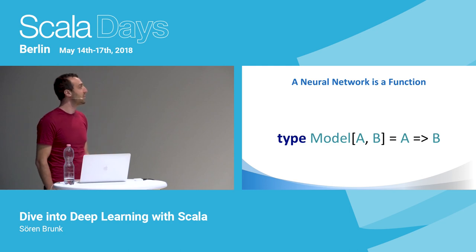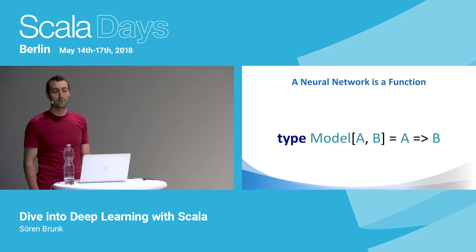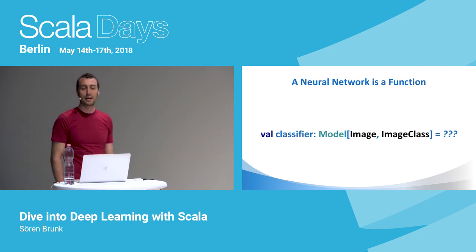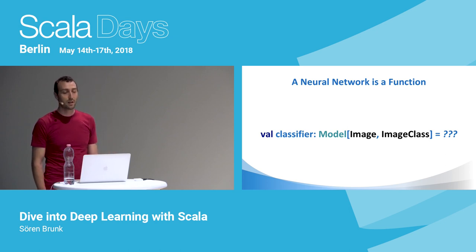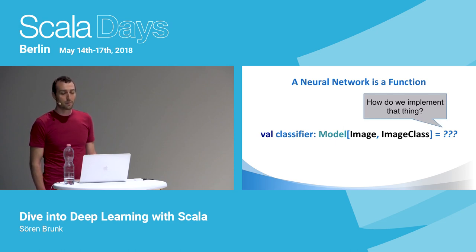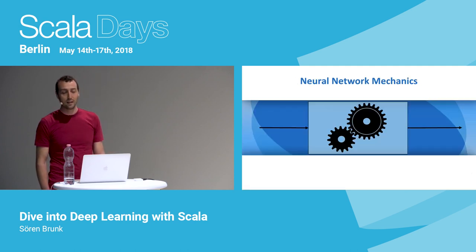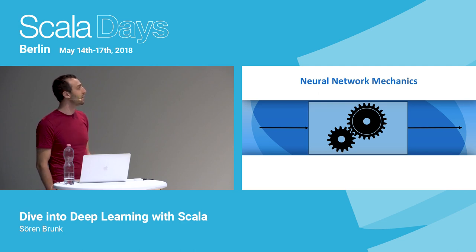In machine learning, a model is something we can use to make predictions — we apply it to our input to get a result back. For instance, we could have a classifier for images, which maps an input image to a class representing the content of that image. But how do we get there? How do we implement that function? To find out, we have to look inside the black box to see what a neural network actually does.